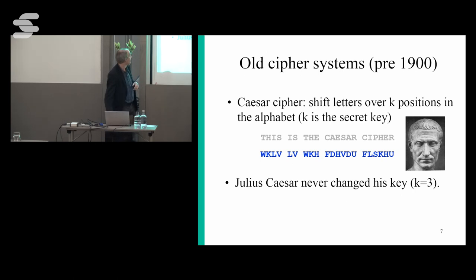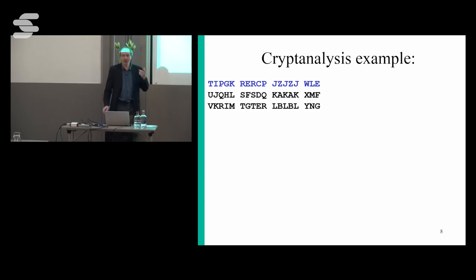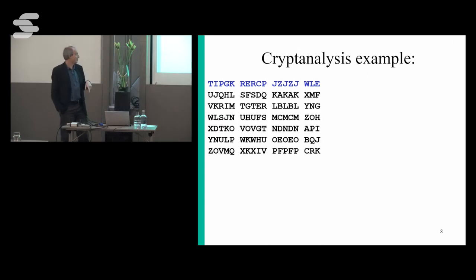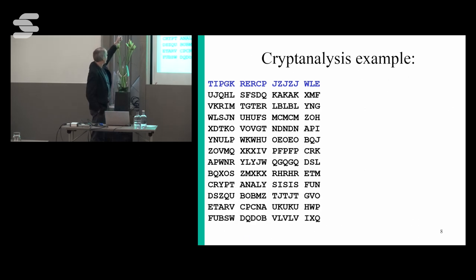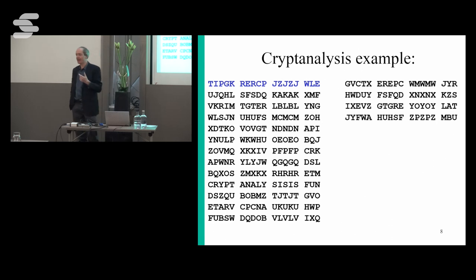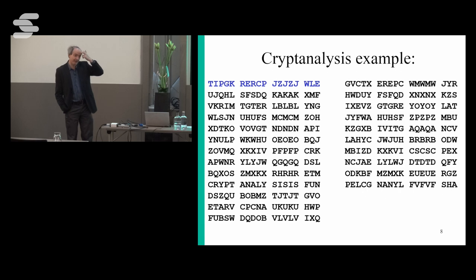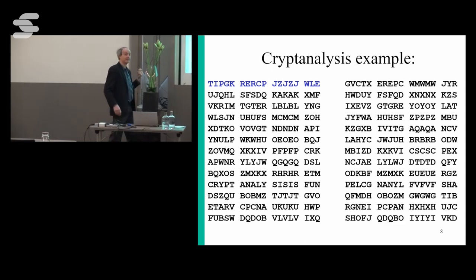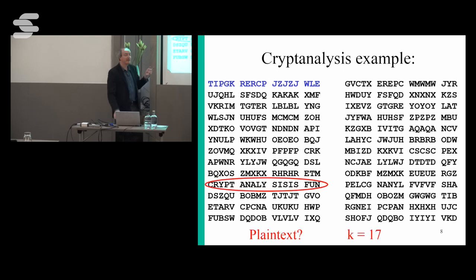The Caesar cipher is not very secure because given a ciphertext you can just try shifting it over one position, two positions, three positions and so on — you will find the plaintext and the key. In this example, the plaintext is 'the analysis is fun' and the key is 17. What we learn from this is that we need many more keys because the opponent can always try all possible key values, like trying to break into a safe or bike lock.